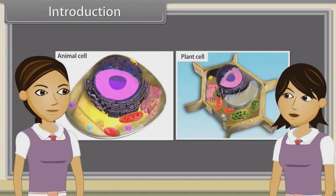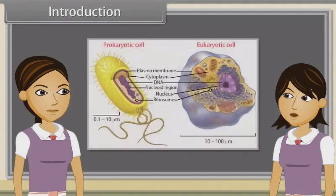We'll also observe the structure of plant and animal cells, discuss differences between them, and also cover prokaryotic and eukaryotic cells.